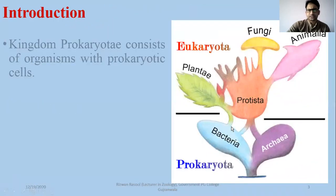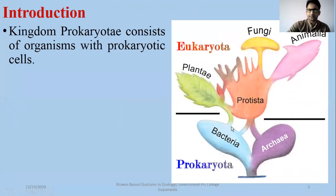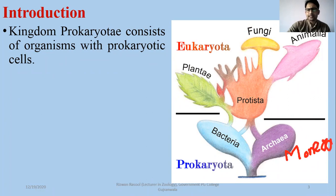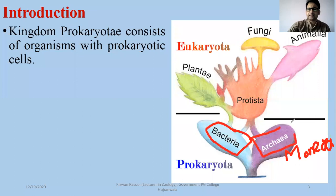First, the introduction of bacteria or prokaryotes — Kingdom Prokaryote or Kingdom Monera. In chapter five you have studied that Kingdom Monera includes bacteria and cyanobacteria. Now, bacteria are of two types: modern bacteria, and ancient bacteria which we call Archaea or Archaeobacteria.